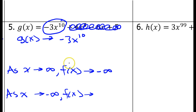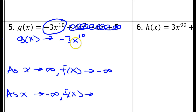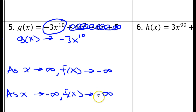Will anything change as we approach negative infinity? The answer is no, because we have an even power. If x is very large in absolute value — if you have a very, very negative number to the tenth power — it's going to become a positive number again. And then multiply that by negative 3, you're going to end up with a very, very negative number. So that's also going to be negative infinity.